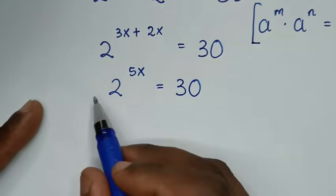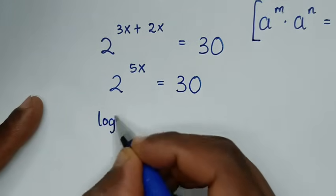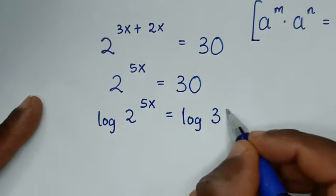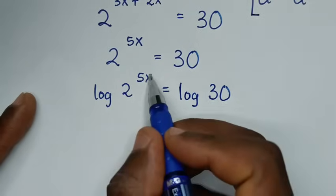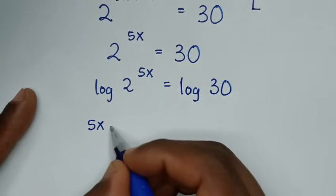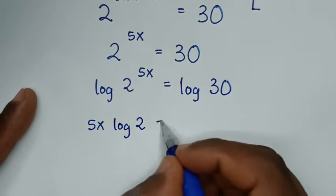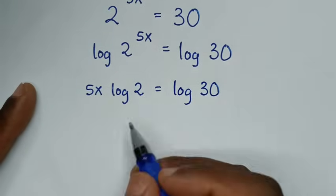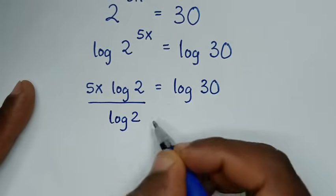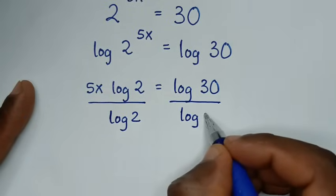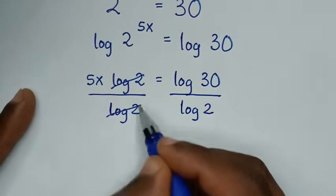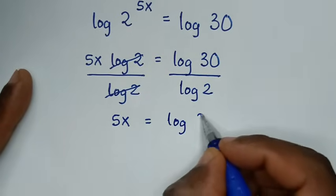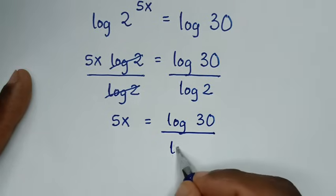Then from here we'll apply log on both sides, so it will be log of 2 power of 5x is equal to log of 30. Then this power of 5x will move to the base, so it will be 5x log of 2 is equal to log of 30. Then we'll divide by log of 2 on both sides, so 5x is equal to log of 30 over log of 2.